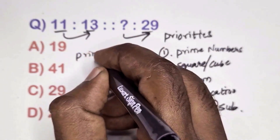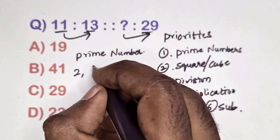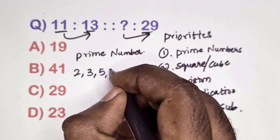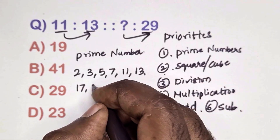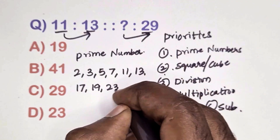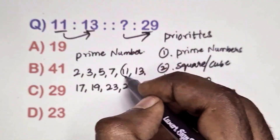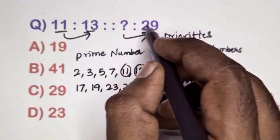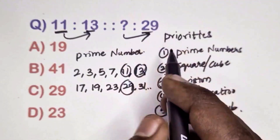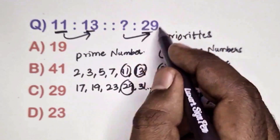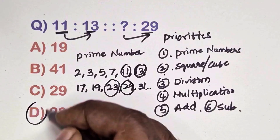Find the different relation between this pair of numbers. The given numbers are prime numbers: 2, 3, 5, 7, 11, 13, 17, 19, 23, 29, 31 and so on. Mark the numbers 11 and 30 — these are adjacent prime numbers. The second number given is 29, so its adjacent prime number is 23. Option D is the correct answer.